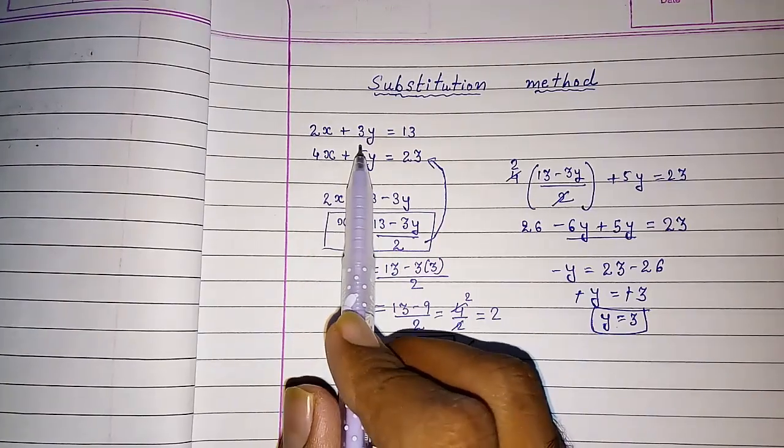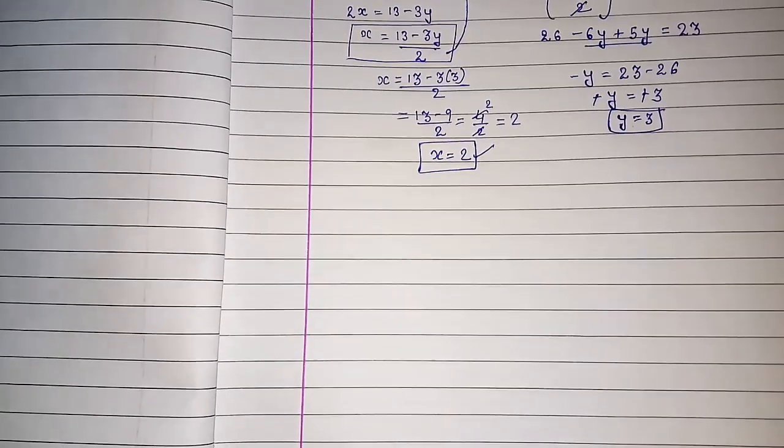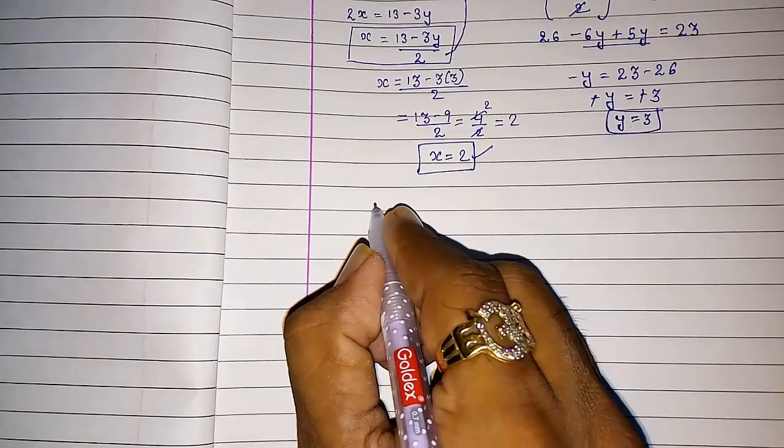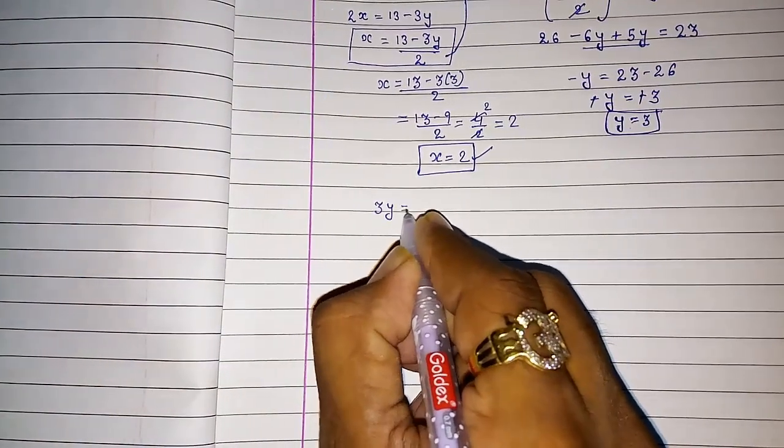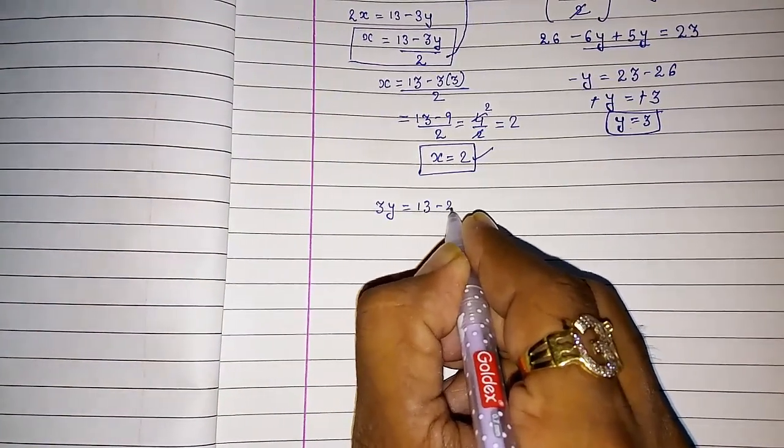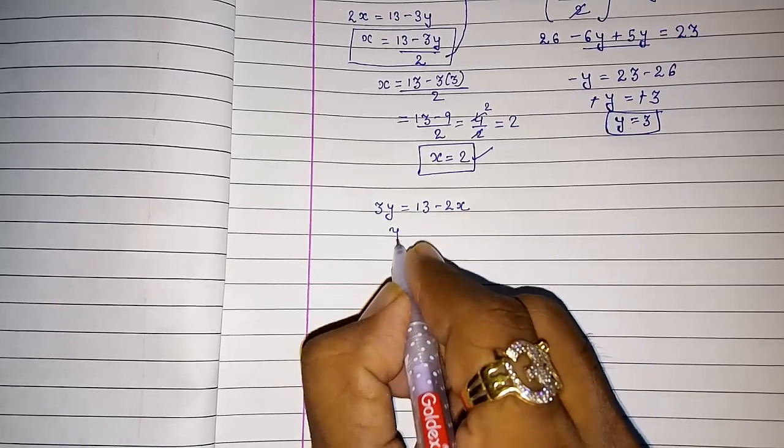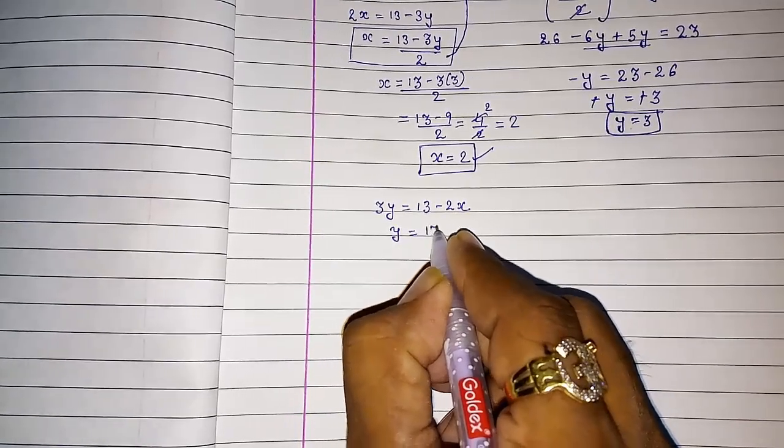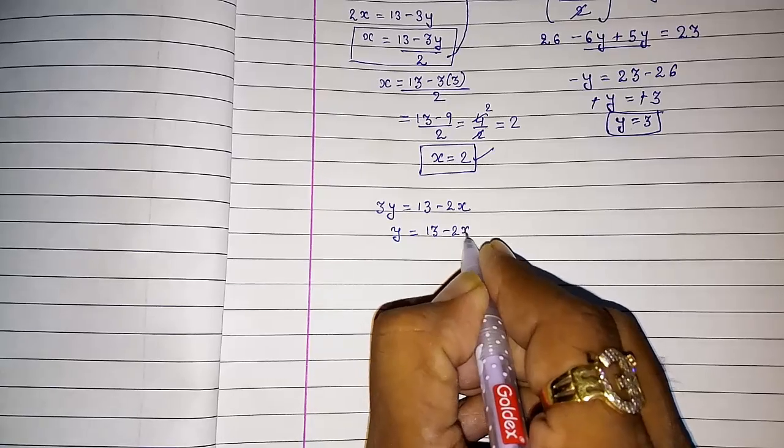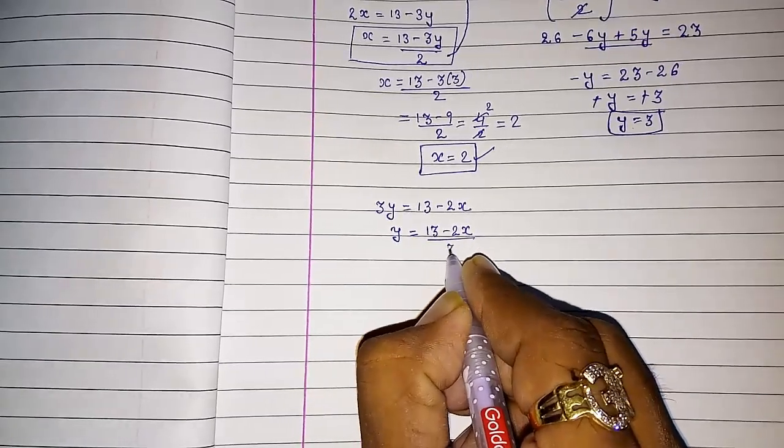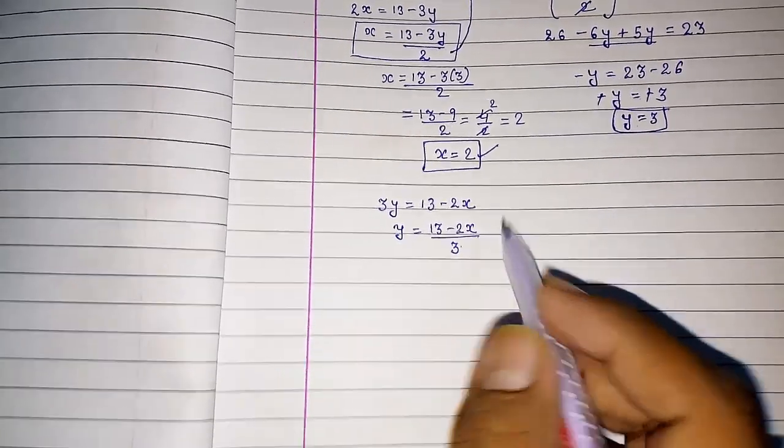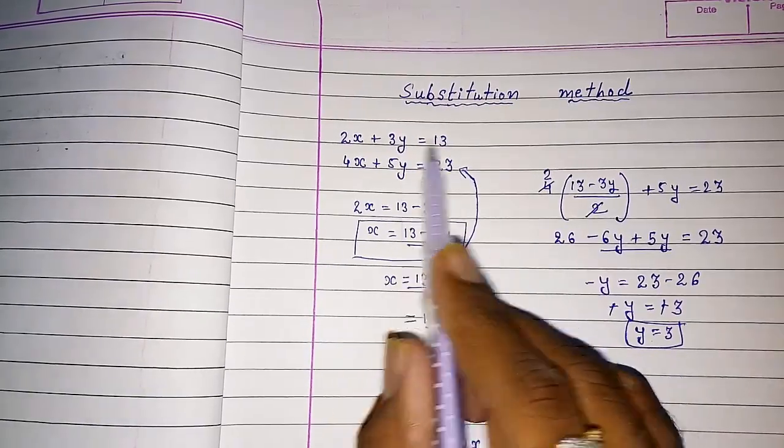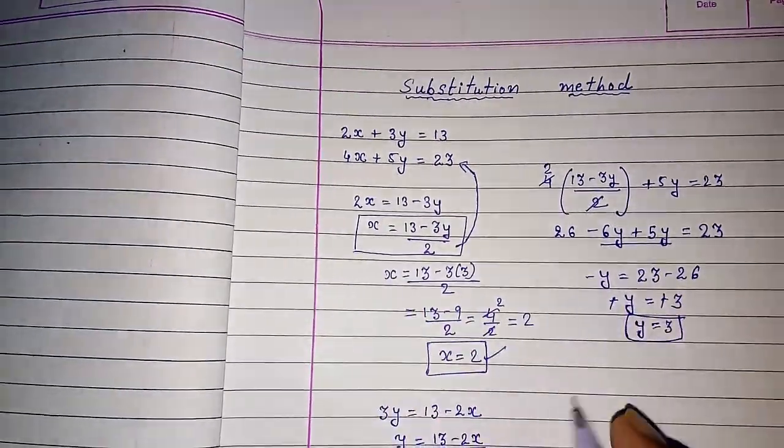This way we can substitute. We can also take y in terms of x. Look, I am solving it now. It was 3y = 13 - 2x, so y = (13 - 2x) / 3. Now we have to keep this value taken from the first equation into the second equation.